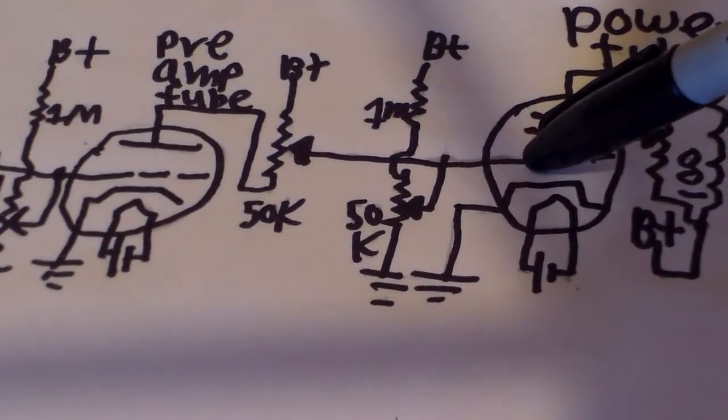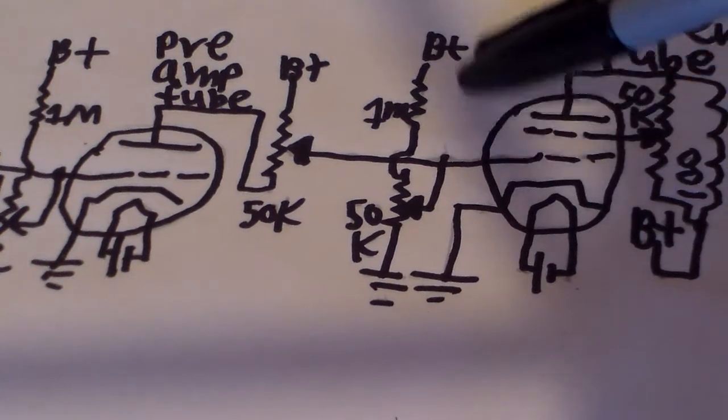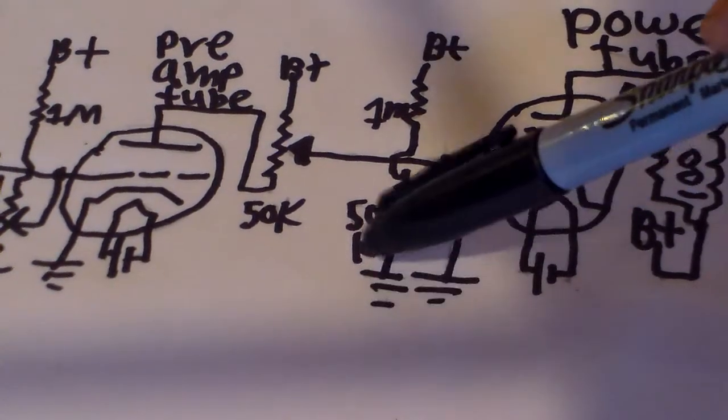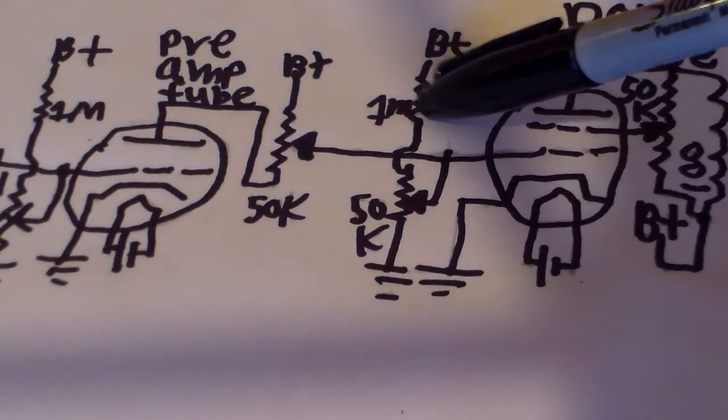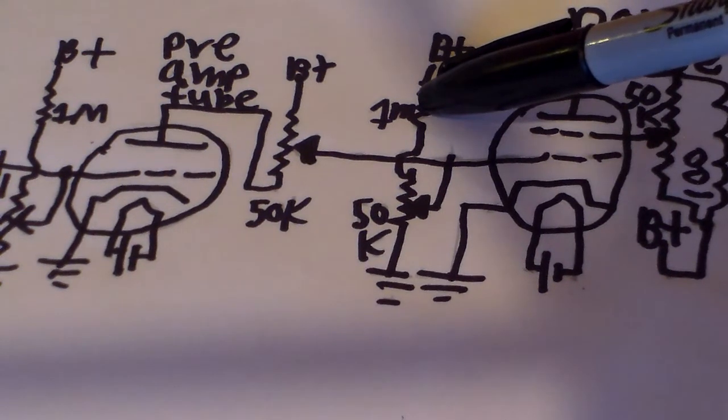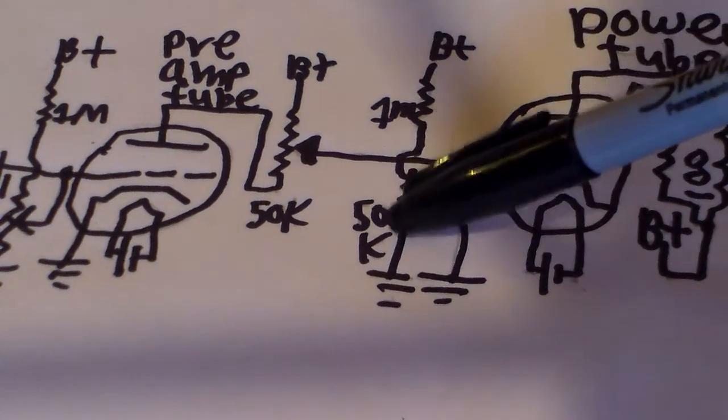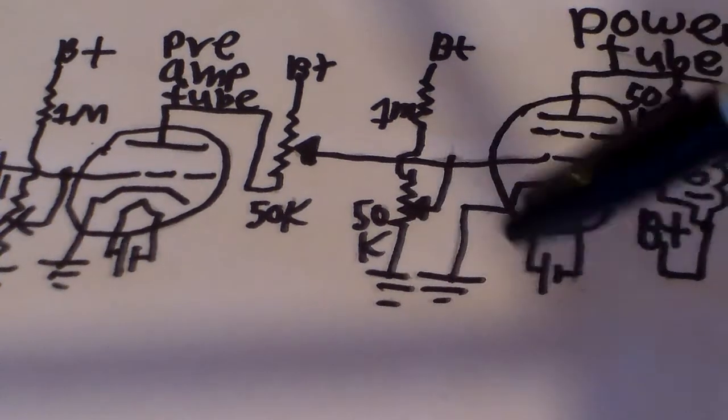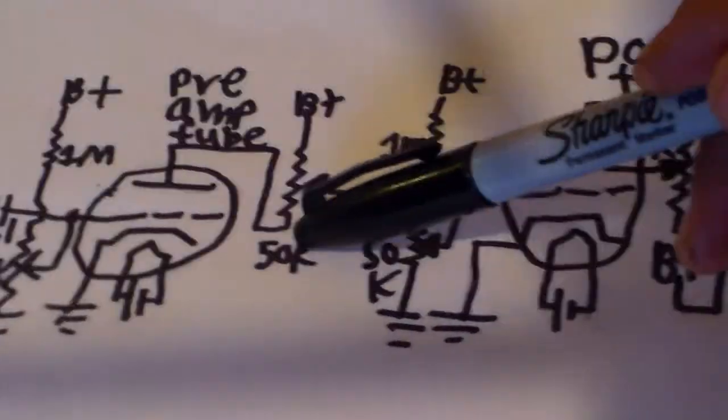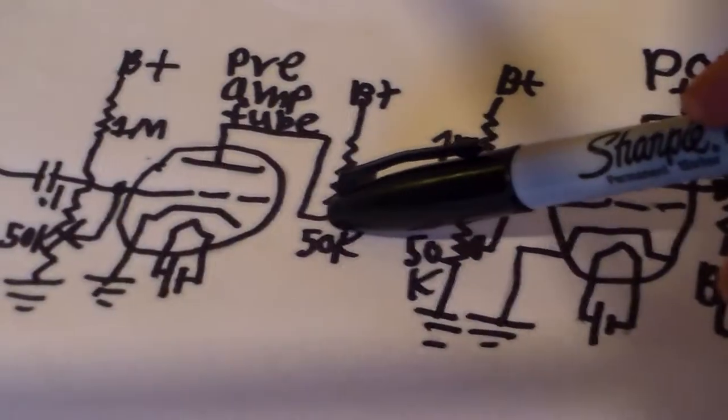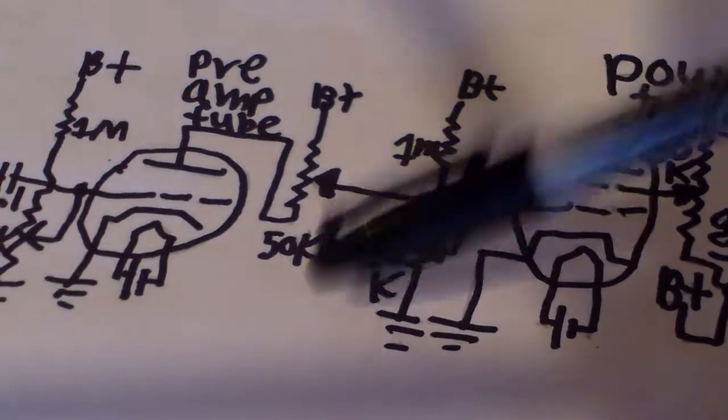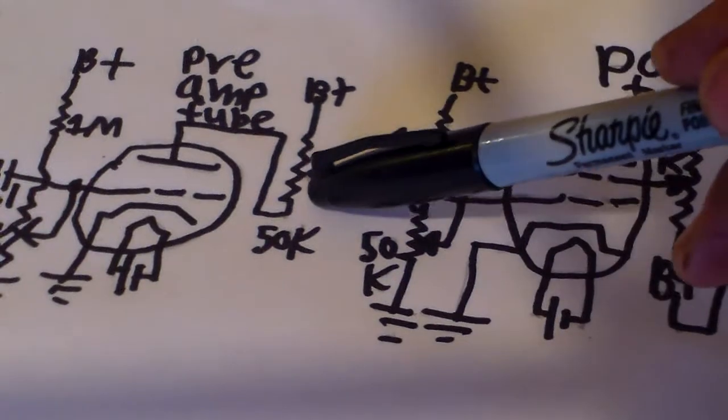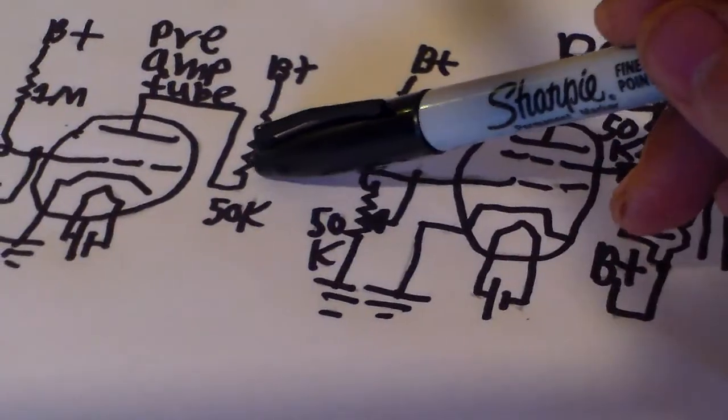Right here on one of the grids of the power tube, we have the same bias as before. 50k ohm potentiometer and 1 mega ohm resistor. And that's connected right here. And that's basically, this potentiometer here is just for safety. It's mainly for safety so we don't overdrive this tube. When you first turn this, I'll get into that later. And that goes to here.